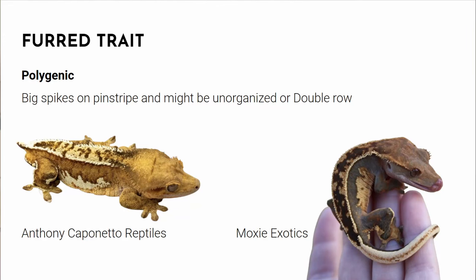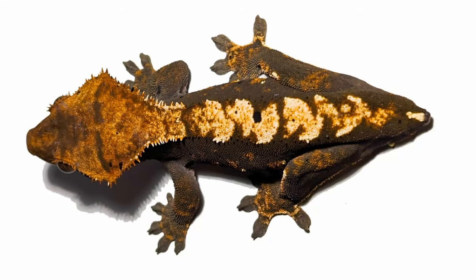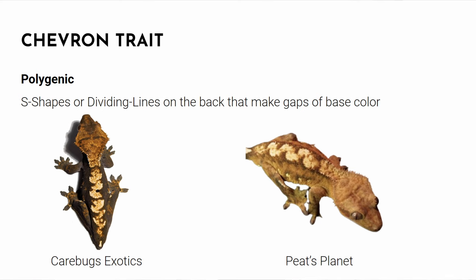The pinstripe is dominant and is a structural mutation affecting the back of the crested gecko — not a color change, but it makes a row of little spikes along the back. Pinstripes have one row of stripes; if you had more than one row it would be called 'third,' like a furry gecko — bigger, less ordered pinstripes. The next gene is Chevron, which is polygenic and makes S-shapes on the back.